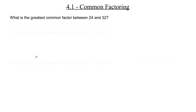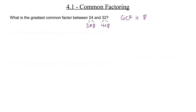Let's use more difficult numbers. What's the greatest common factor between 24 and 32? Does 4 go into both? Yes. Does 8 go into both? Yes — and 8 is bigger than 4. We know 24 is 3 times 8, and 32 is 4 times 8. So the GCF in this case is 8. 24 has other factors like 2, 4, 6, and 12, but the highest one shared with 32 is 8.